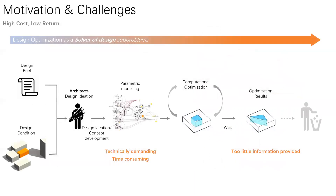Here is an ordinary workflow of using performance-based design optimization in architecture design. The architect has to first conceive the design concept based on the design brief and conditions, then translate the design concept into a parametric model, run the optimization process, and get the result. However, because the optimization result has a tight connection to the parametric model, and the parametric model has a tight connection to the design concept, the optimization result usually has a strong relationship with the design concept. As a result, the optimization cannot output design variants beyond what the designer defines.